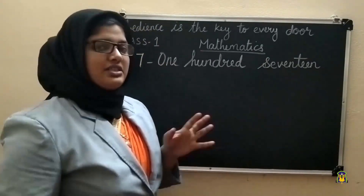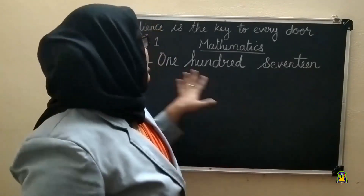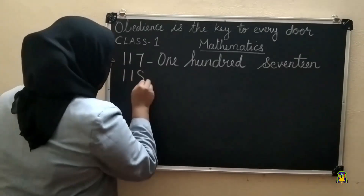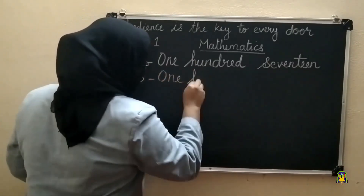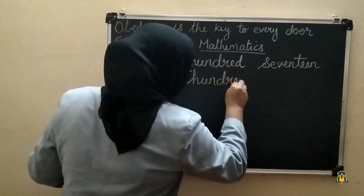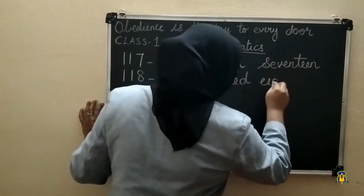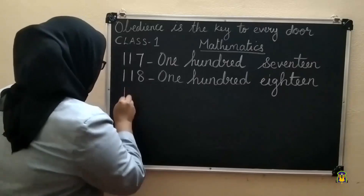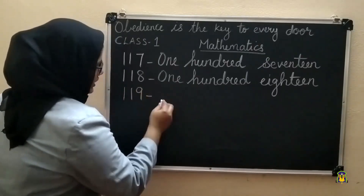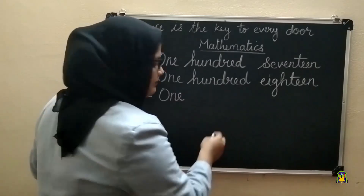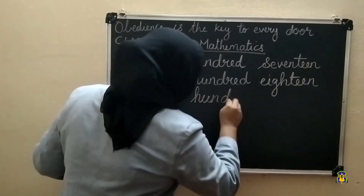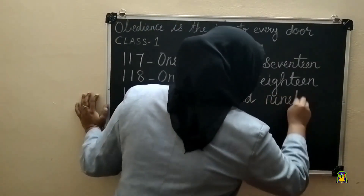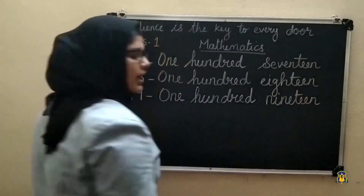These spellings for seventeen and others you have already studied. One hundred and seventeen, then one hundred and eighteen: O-N-E H-U-N-D-R-E-D, E-I-G-H-T-E-E-N, eighteen. Next, one hundred and nineteen: O-N-E H-U-N-D-R-E-D, N-I-N-E-T-E-E-N, nineteen.